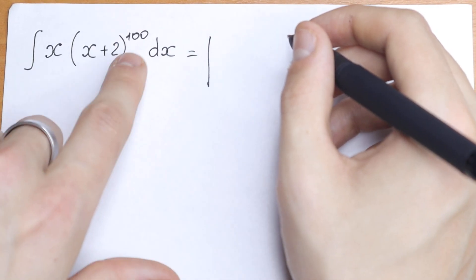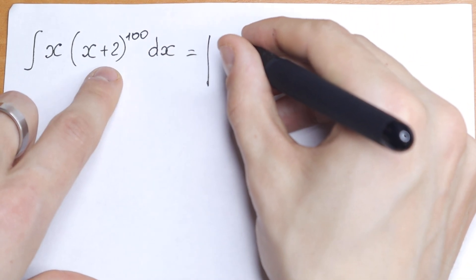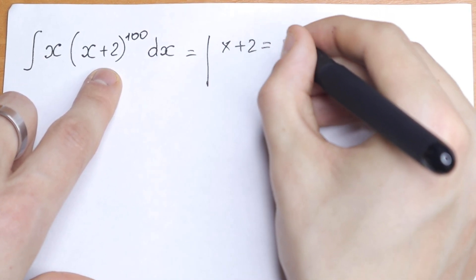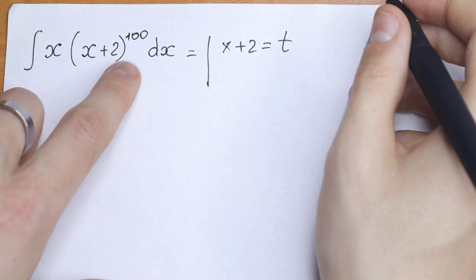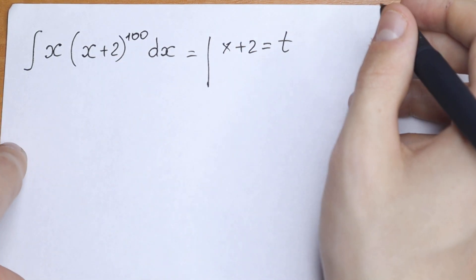So I want to suggest a really good trick how to solve that kind of integral. So let's have this element with the huge number be our t. So x plus 2 equal to t. So we don't need this huge number.